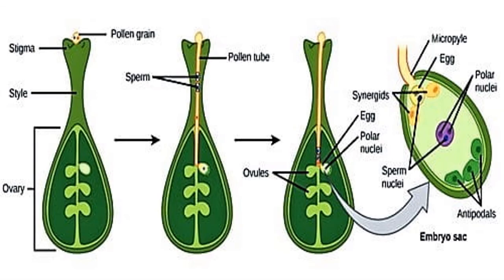During the favorable season, the stigma becomes sticky. When pollen grains fall upon this sticky stigma, they stick to it and try to grow. The pollen grain germinates and a pollen tube grows out from it.